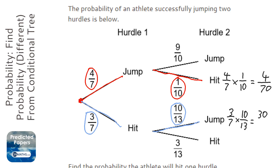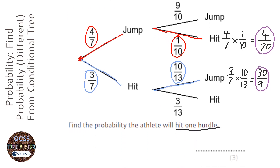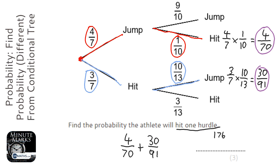That's going to be 30 over 91. Now we're either going to end up where he's hit the second one, or where he's hit the first one. The word 'or' in probability means add. So on the calculator — because this is a calculator question — it'd be 4 over 70 plus 30 over 91.